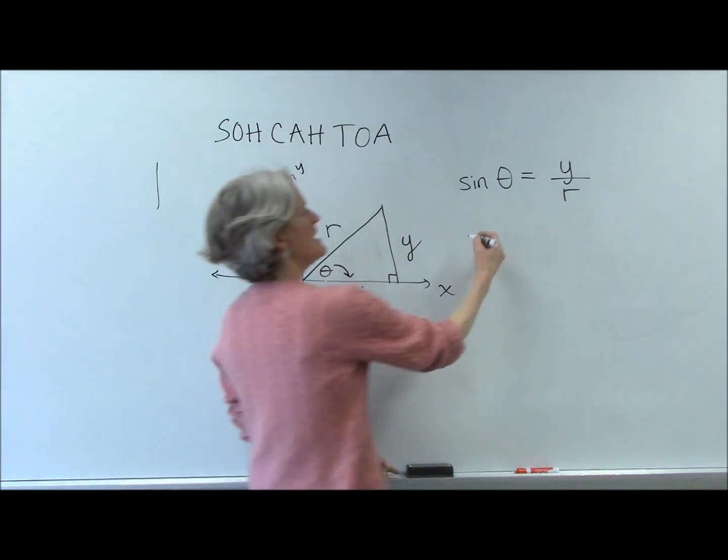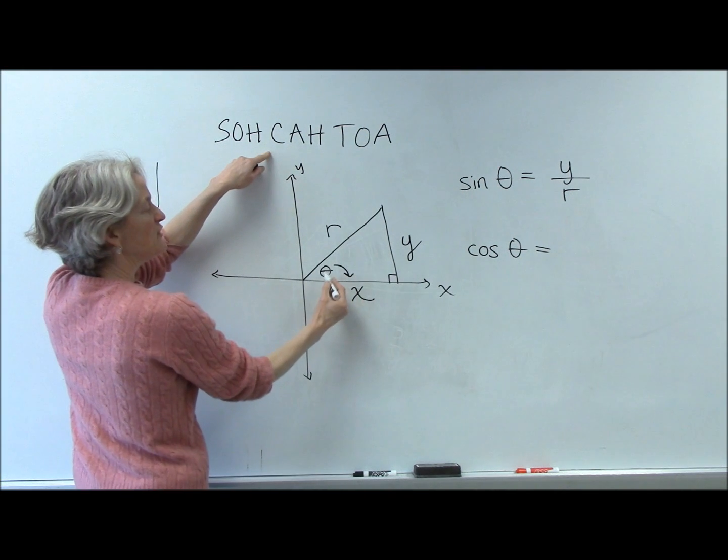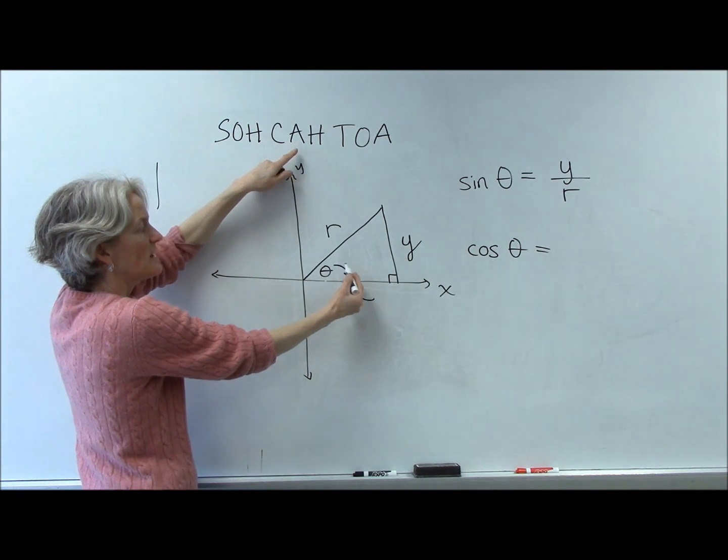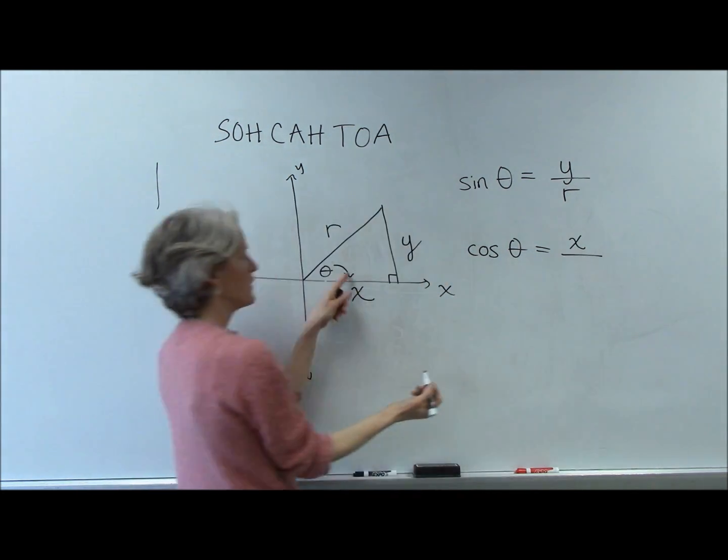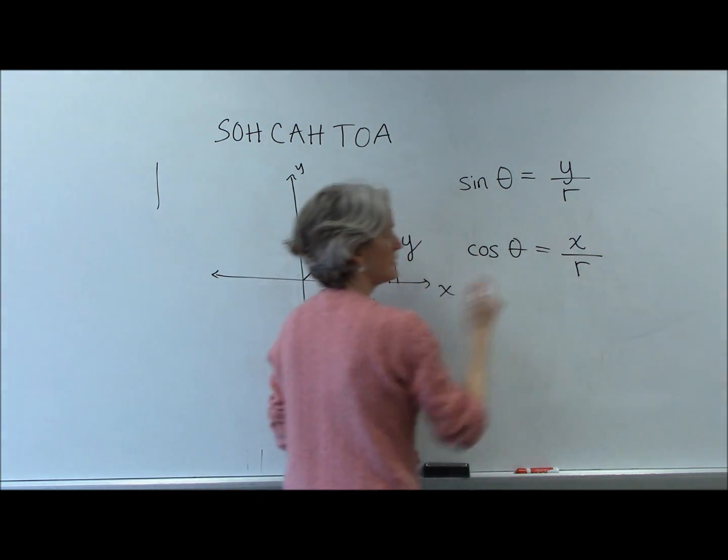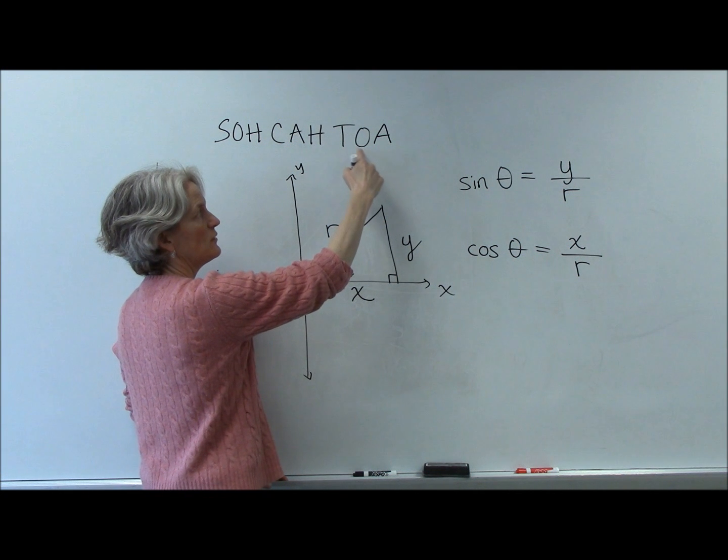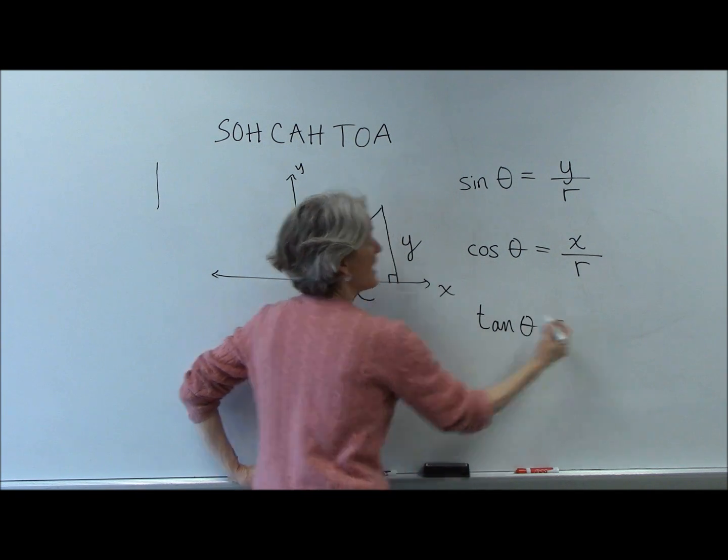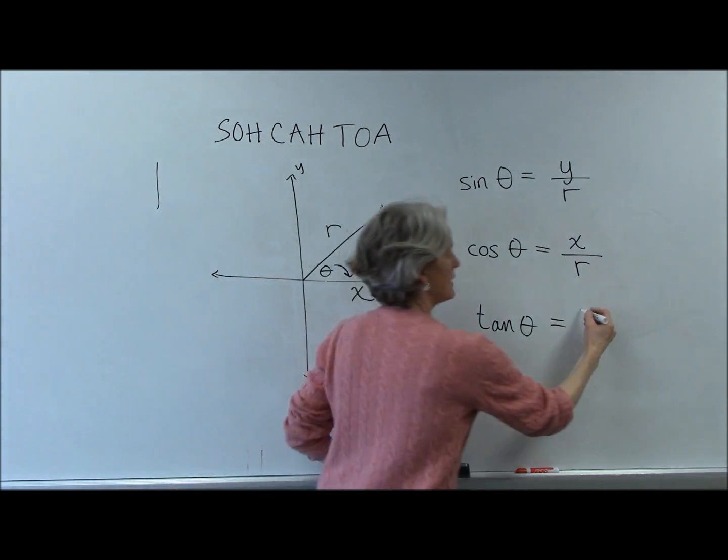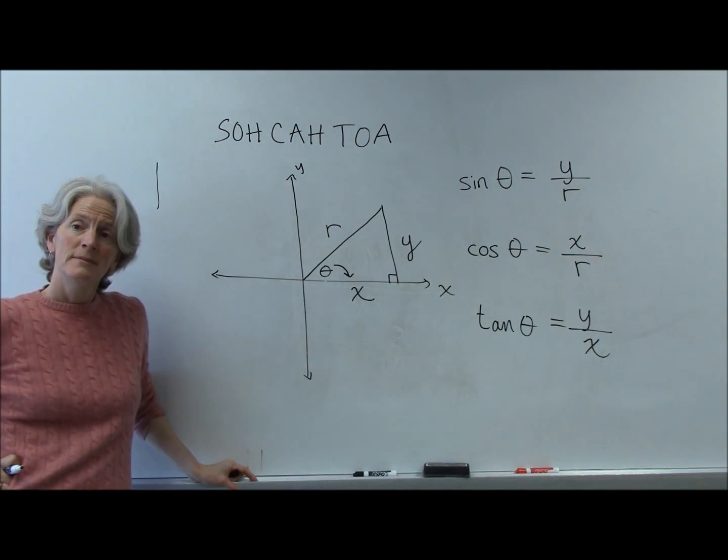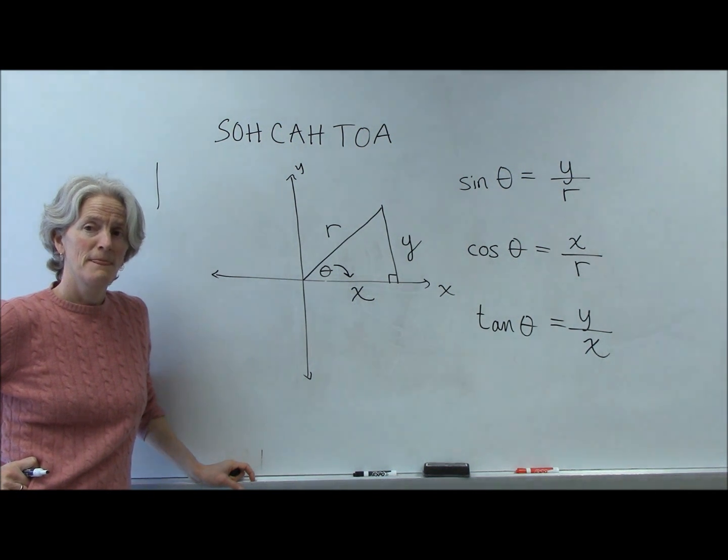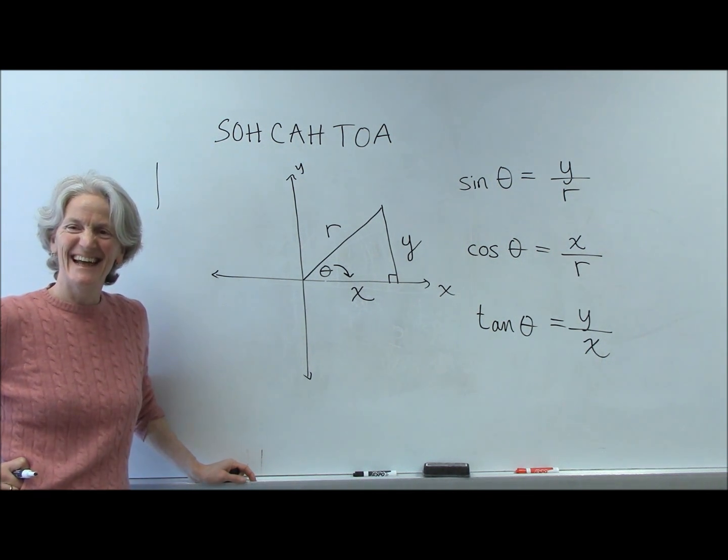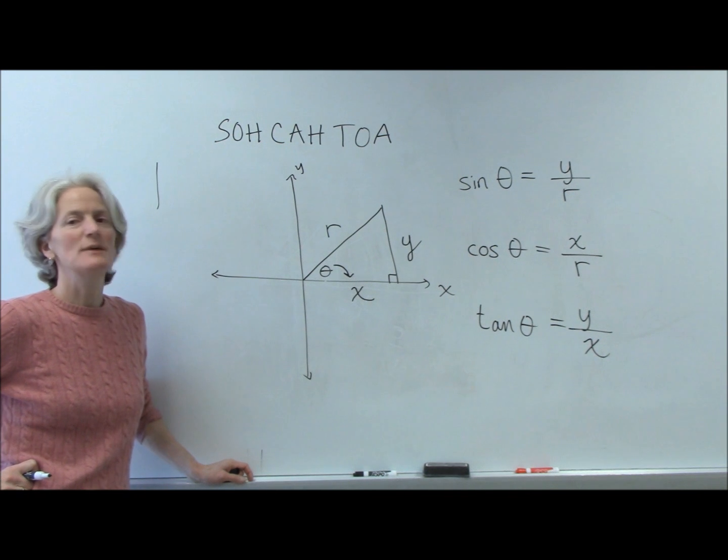Ta-da! The cosine, which has always been adjacent over hypotenuse, is now going to be tweaked slightly. We're going to think of it as our X value over your hypotenuse, which is your R. Tangent, which is opposite over adjacent, will now be thought of as your Y over X. So instead of SOHCAHTOA, there's SIRI, KIXER, DIXI. Exactly right. How handy is that? SOHCAHTOA sounds better. But it's the same stuff. It's the same stuff. Same things.